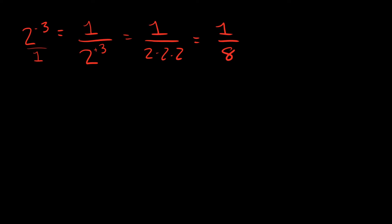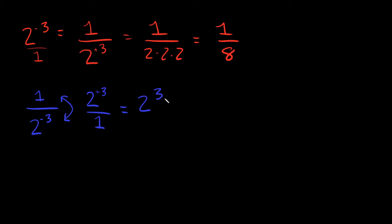Now, what if I had 1 over 2 to the negative 3? This time the negative exponent is in the denominator. We do the same thing — flip it and make the exponent positive. So 2 to the negative 3 moves to the top and becomes 2 to the positive 3 over 1, which is simply 2 cubed. And 2 cubed is 2 times 2 times 2, which equals 8. So negative exponents work both ways: if they start on top, move them to the bottom and make them positive; if they start on the bottom, move them to the top and make them positive.